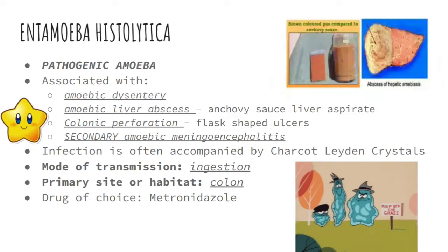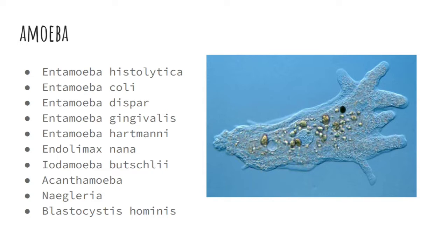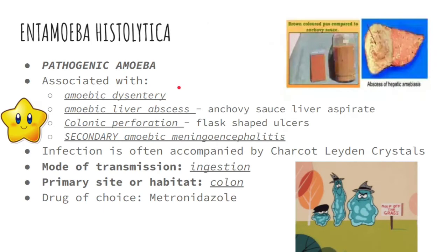First is Entamoeba histolytica. In all of the amoeba species listed, only one is actually pathogenic — and that is Entamoeba histolytica. The rest are commensals that do not normally cause disease. Entamoeba histolytica is associated with amoebic dysentery.